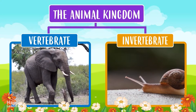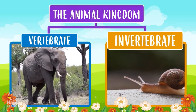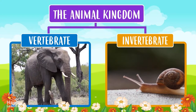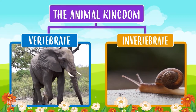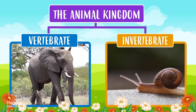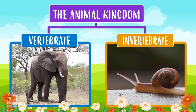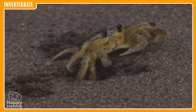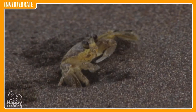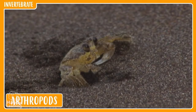Within the group of invertebrates — those animals that don't have bones — there are arthropods, like this crab.